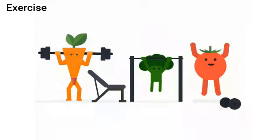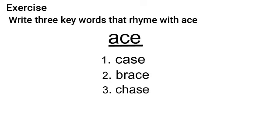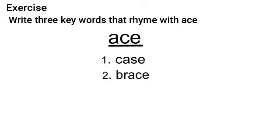There is another exercise for you. Write three keywords that rhyme with 'ace'. Here I have written the three rhyming words of ace. These are: 'case', 'brace', and 'chase'. Case means an incident. Brace is a support of something. And chase means to hunt or to follow.